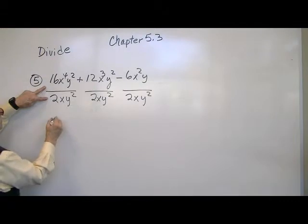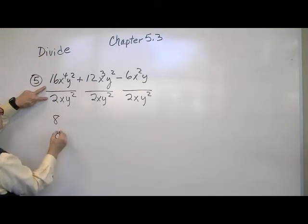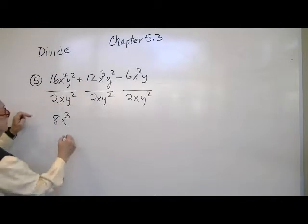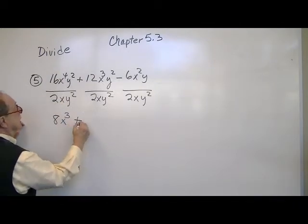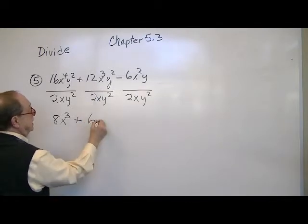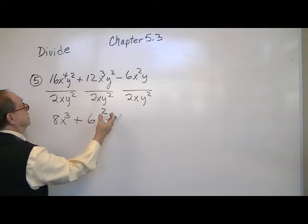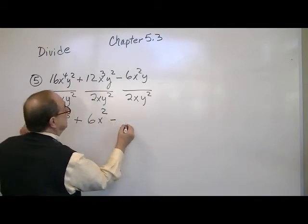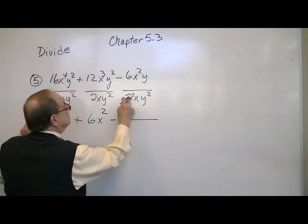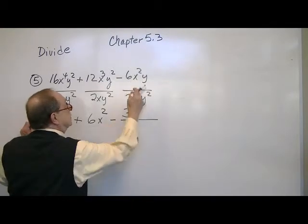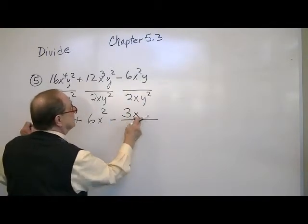So I'll do it without canceling out. Two will go into six eight times. X will go into X to the fourth, X to the third. And these cancel out completely. Then there's my next sign. Two goes into 12 six times. X to the second. And again Y to the square cancels out. Next one, two will go into six three times. X will go into X squared once, so we have an X left over.